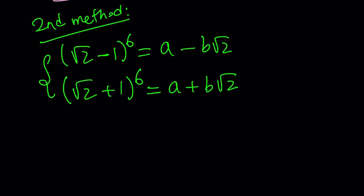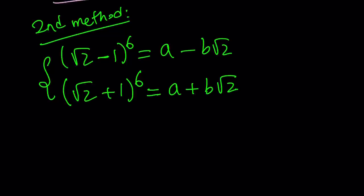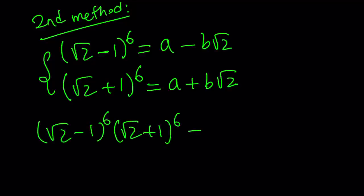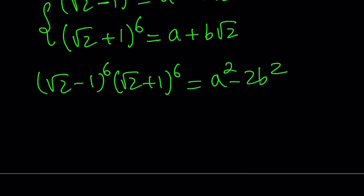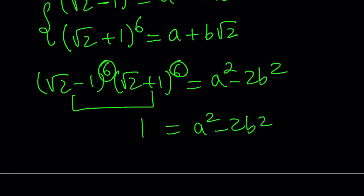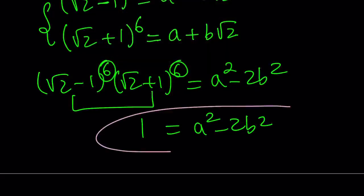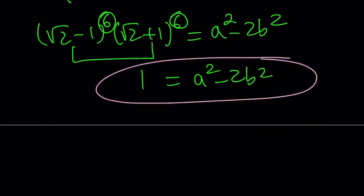Here's what we're going to do: we're going to multiply these two expressions together. The right-hand side gives us, from difference of two squares, a squared minus 2b squared. Notice that these two expressions can be multiplied together because they both have sixth powers and their product is 1. So we get 1 on the left-hand side and a squared minus 2b squared on the right-hand side, which is what we were looking for. Therefore, the answer is 1. And this brings us to the end of this video.